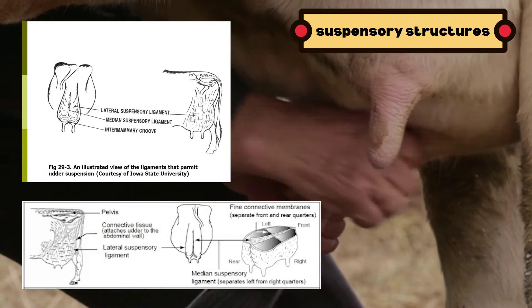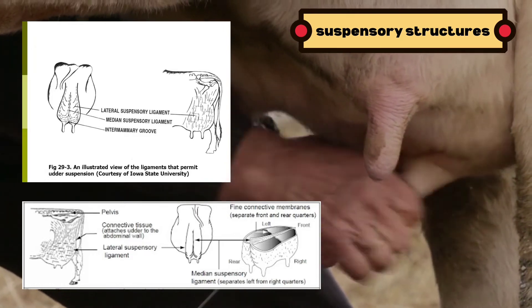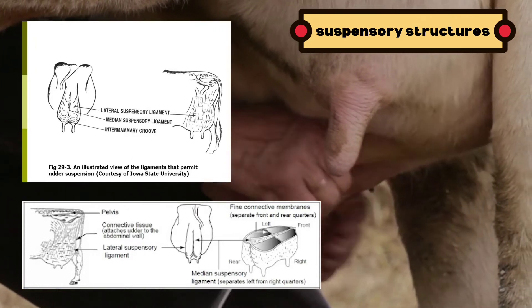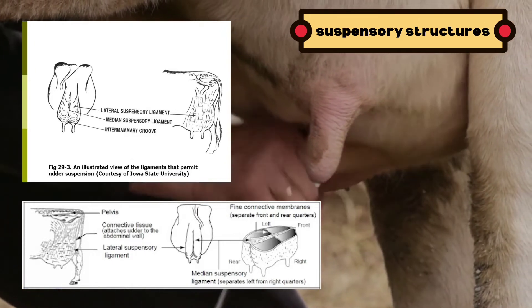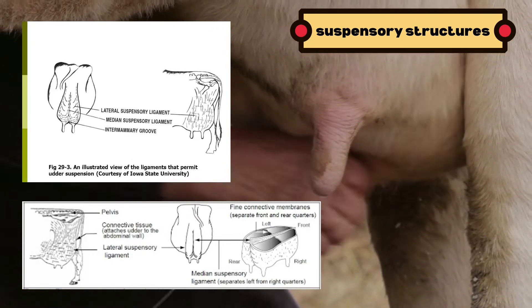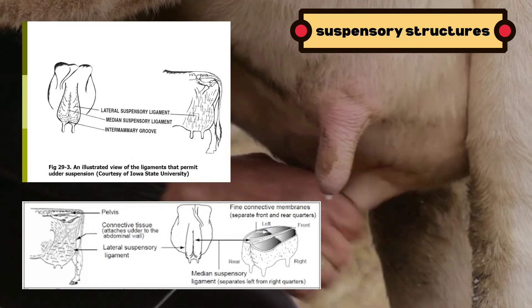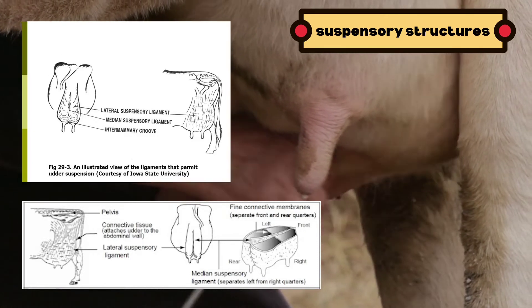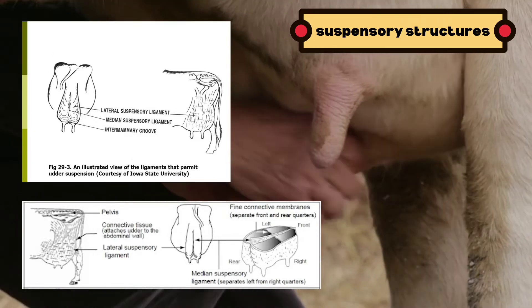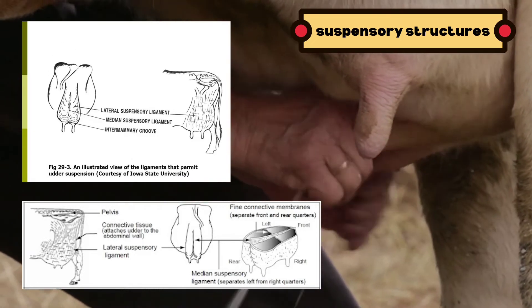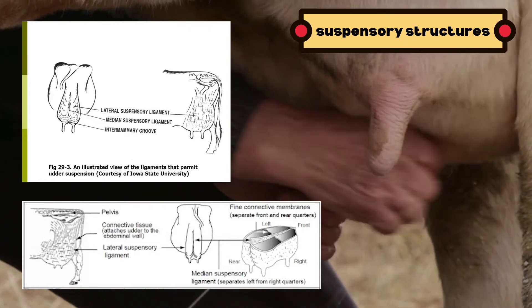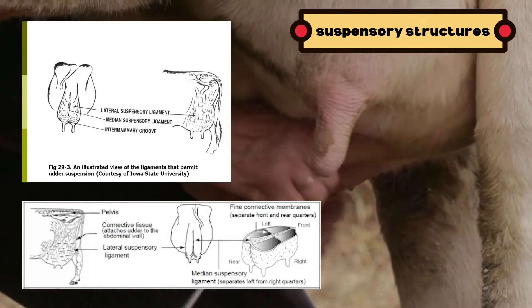First, the suspensory structures or supportive structures. A strong udder suspensory system is required to maintain proper attachments of the gland to the body. The mammary gland is a skin gland and is external to the body cavity, so the system of ligaments and other tissues which attach the udder to the animal are critical for successful lactation.